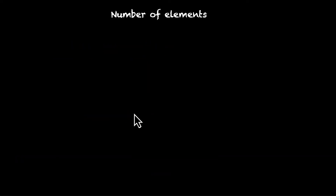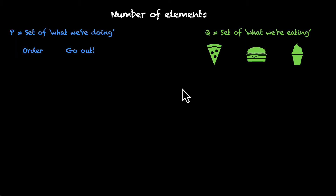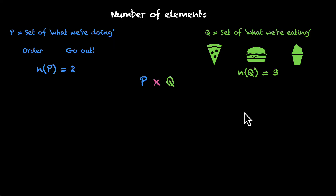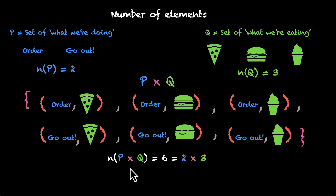Let's talk about the number of elements. How many elements do Cartesian products have? Let's take the same example. If P is the set of what we are doing and it has two elements — order and go out — and Q is the set of what we are eating with three elements — pizza, burger, and ice cream — then n(P) is 2 and n(Q) is 3. Our Cartesian product P times Q has six elements. Six is 2 times 3, and in general you can find the number of elements in a Cartesian product by multiplying the number of elements of the sets involved. So n(P×Q) = n(P) × n(Q).